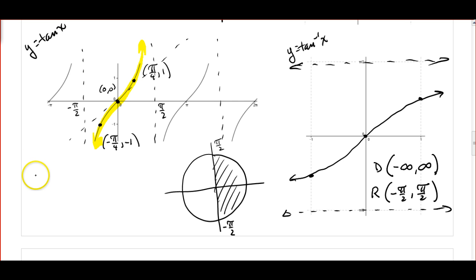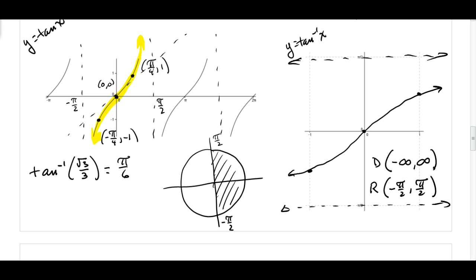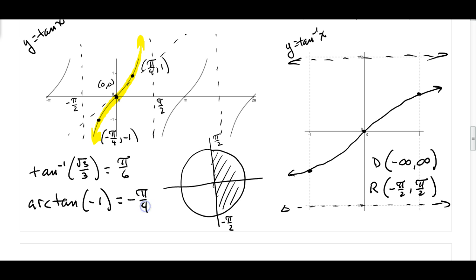Let's look at a quick example. For tan inverse of root 3 over 3, I want to find what angle has a tangent of root 3 over 3. It has to be somewhere between negative pi over 2 and positive pi over 2, and that would be pi over 6. With different notation, arctan of negative 1: what angle has a tangent of negative 1? It has to be on the right half of the circle, and that would be negative pi over 4.